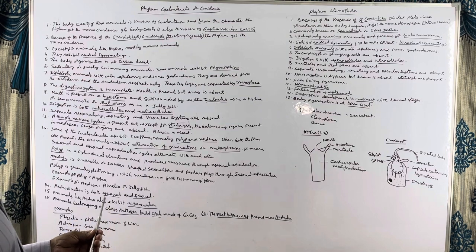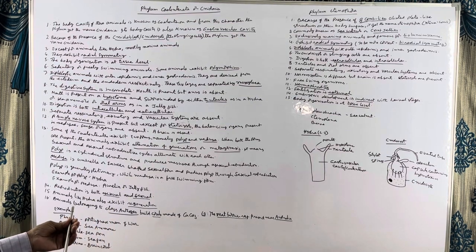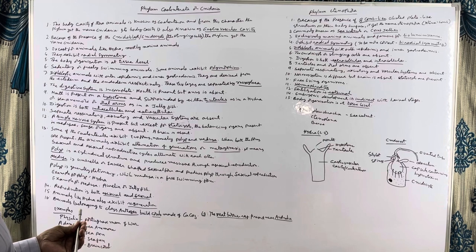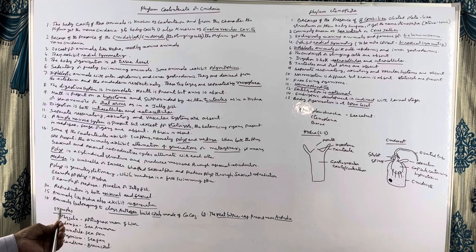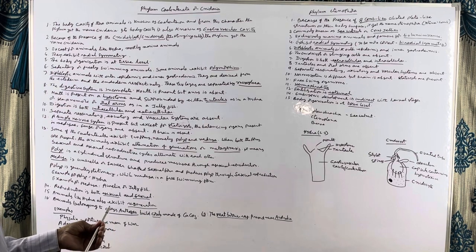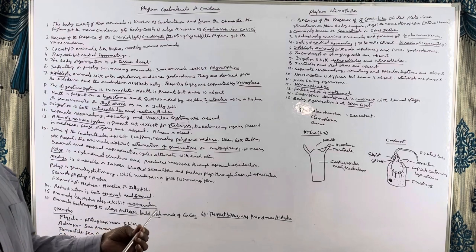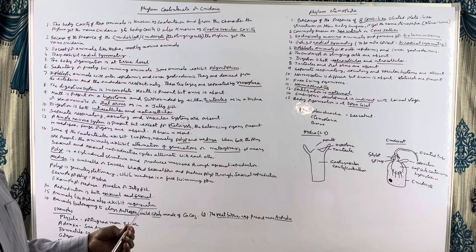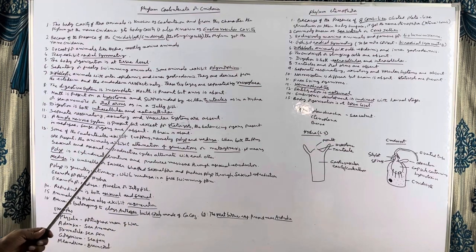Today we are taking up the characters of Phylum Coelenterata and Phylum Ctenophora. Phylum Coelenterata got its name from the presence of the body cavity known as the coelenteron. These animals have a body cavity called coelenteron, which gives the name Coelenterata. This phylum is also known as Cnidaria because they have stinging cells known as cnidoblasts.